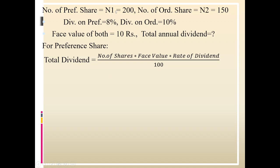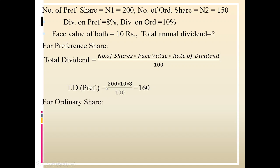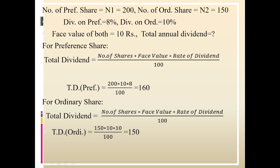For preference shares: n = 250, dividend rate = 8%, face value = ₹10, giving total dividend = ₹200. For ordinary shares: n = 150, dividend rate = 10%, face value = ₹10, giving total dividend of ordinary shares = ₹150.